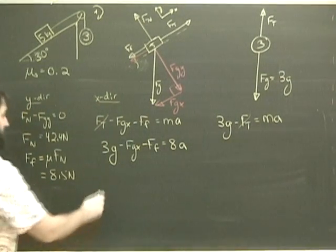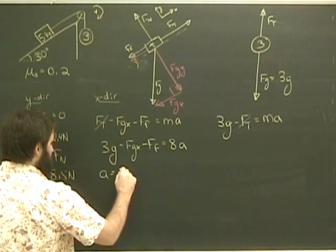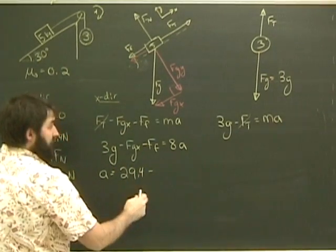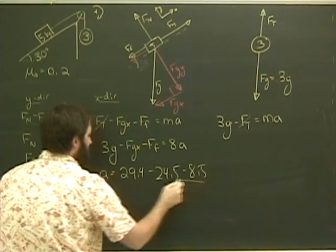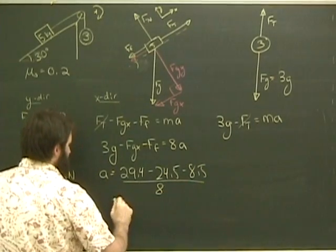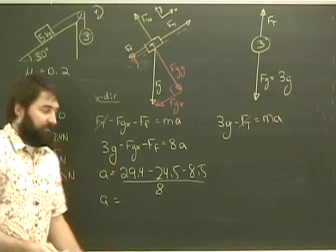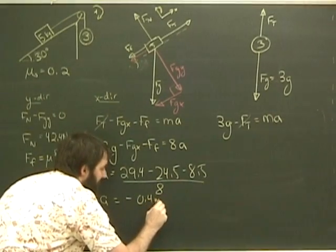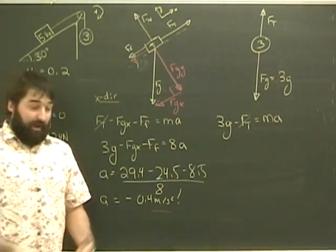I go ahead and I do my math. I get a equals 3g is 29.4 minus Fgx, which is 24.5 minus 8.5, all divided by 8. I grab my calculator, and there's a problem. The answer is negative 0.45 meters per second squared, and I am confused. How can it be negative?